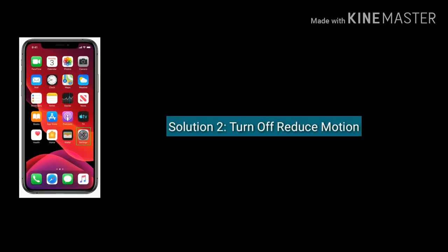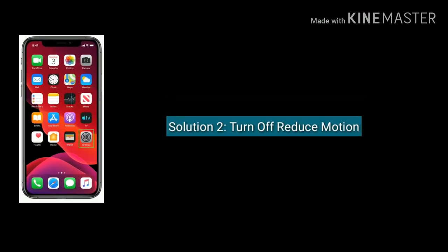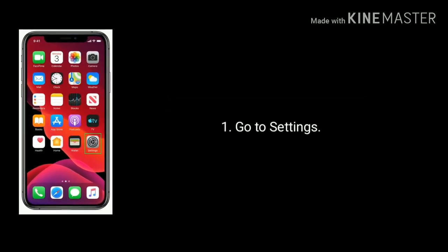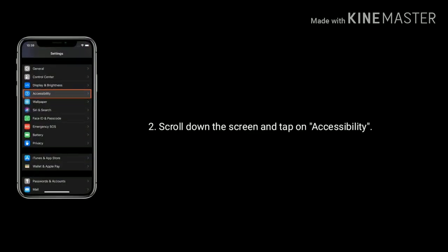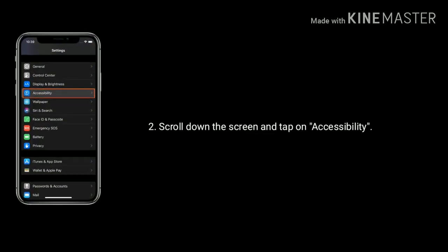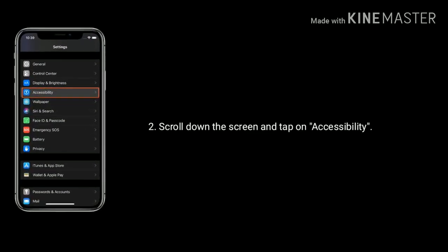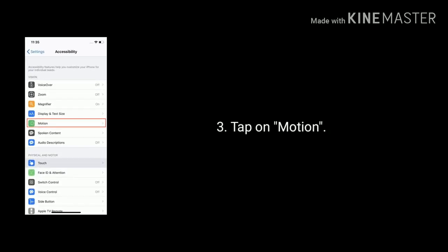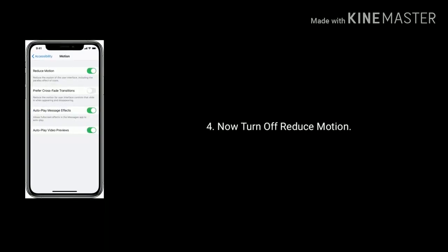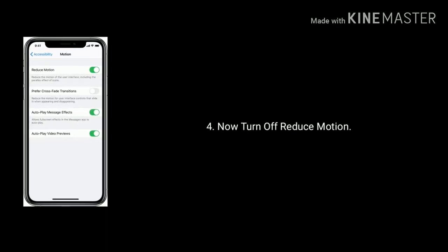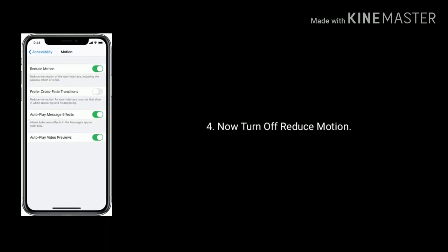Solution 2 is Turn off Reduce Motion. First, go to the Settings app. Scroll down the screen and tap on Accessibility. Now tap on Motion. Then turn off Reduce Motion.